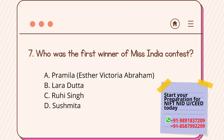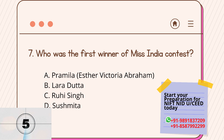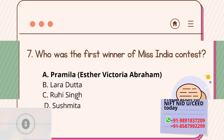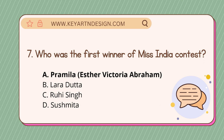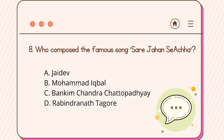Question number seven: who was the winner of the first Miss India contest? Option A: Pramila, Option B: Lara Datta, Option C: Ruhi Singh, Option D: Sushmita. The correct answer is Option A, Pramila.